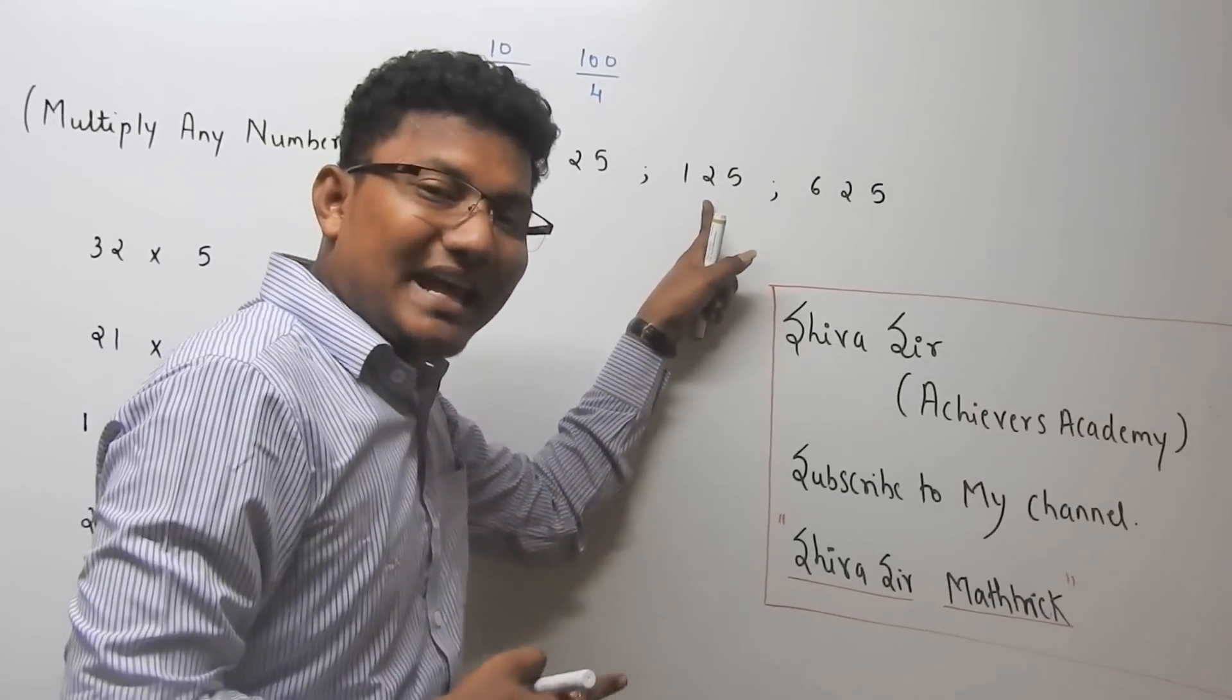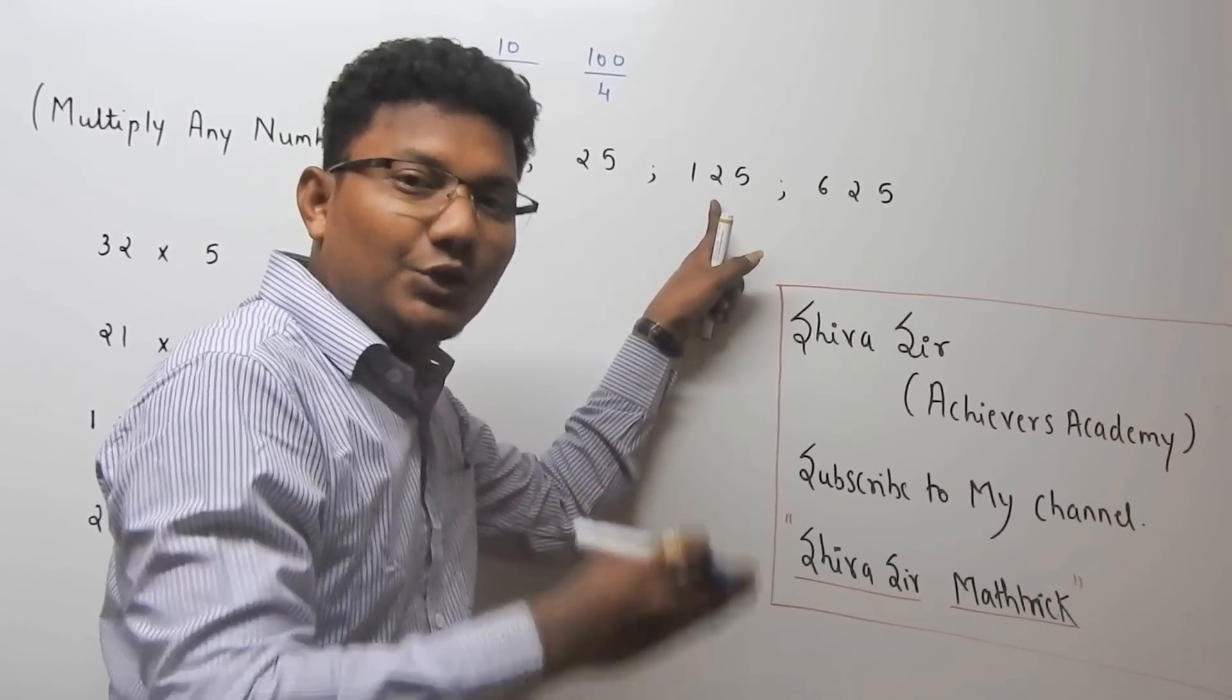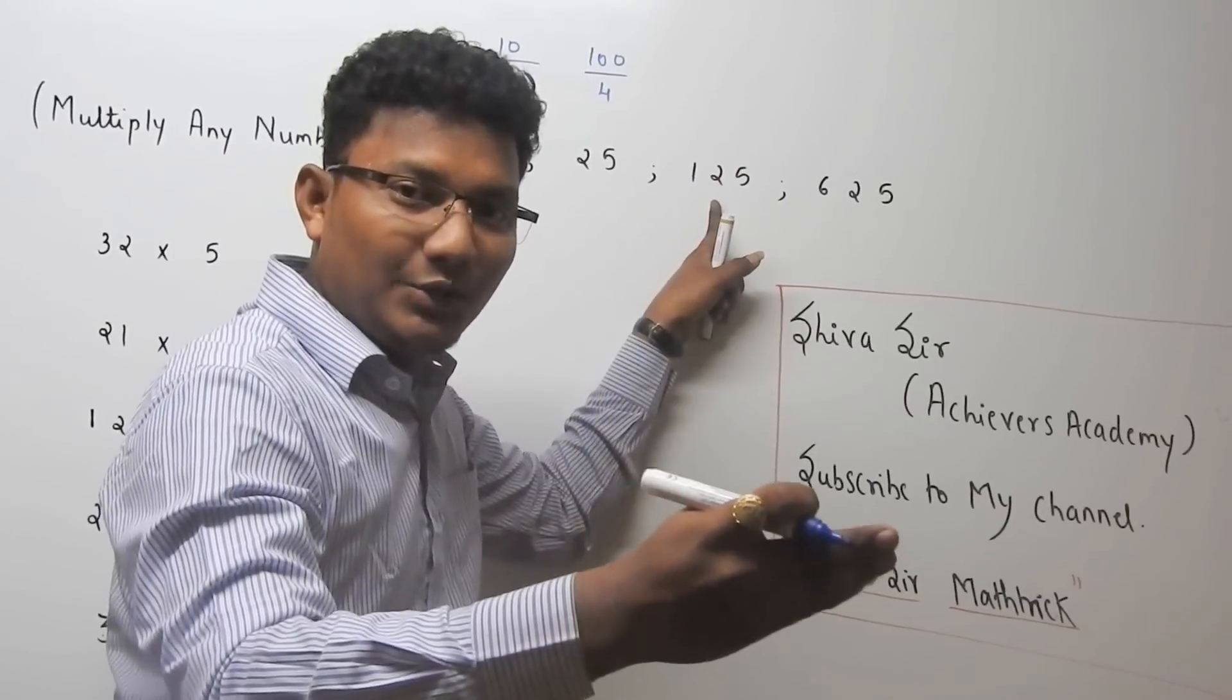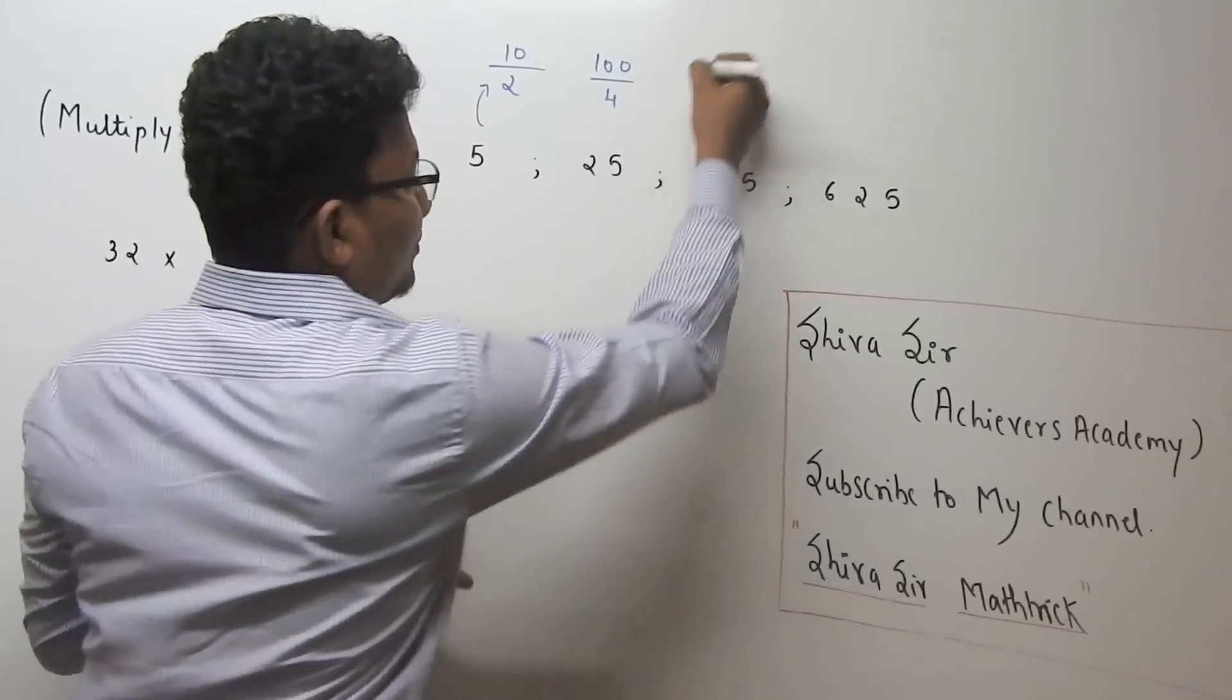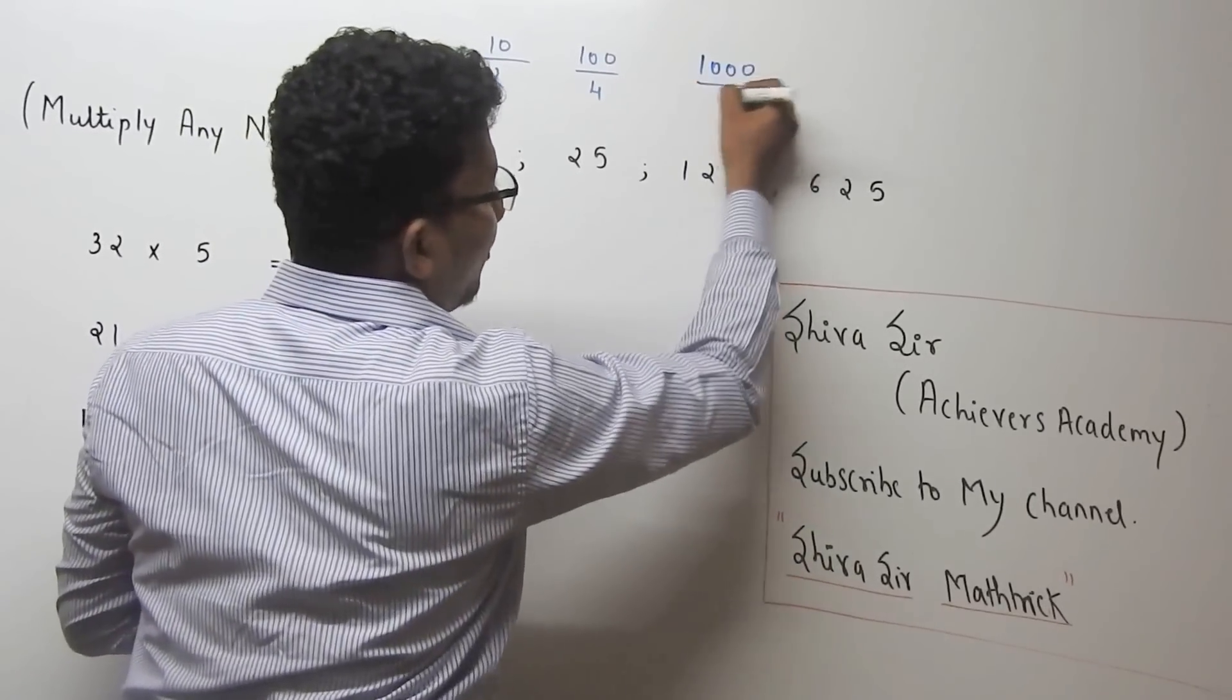125 is 5 cubed, so it can be written as 10 by 2, 10 by 2, 10 by 2. So 1000 upon 8. This can be written as 1000 upon 8.